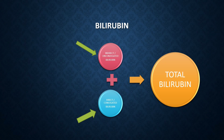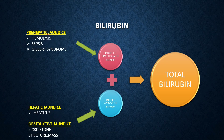We can measure both indirect and direct bilirubin in the serum sample of the patient. Indirect or unconjugated bilirubin increases in prehepatic jaundice or prehepatic causes like hemolysis, sepsis, or Gilbert syndrome. Direct or conjugated bilirubin increases in hepatic causes like hepatitis, or post-hepatic causes (obstructive jaundice) such as CBD stone, stricture, or mass. This is all about bilirubin.